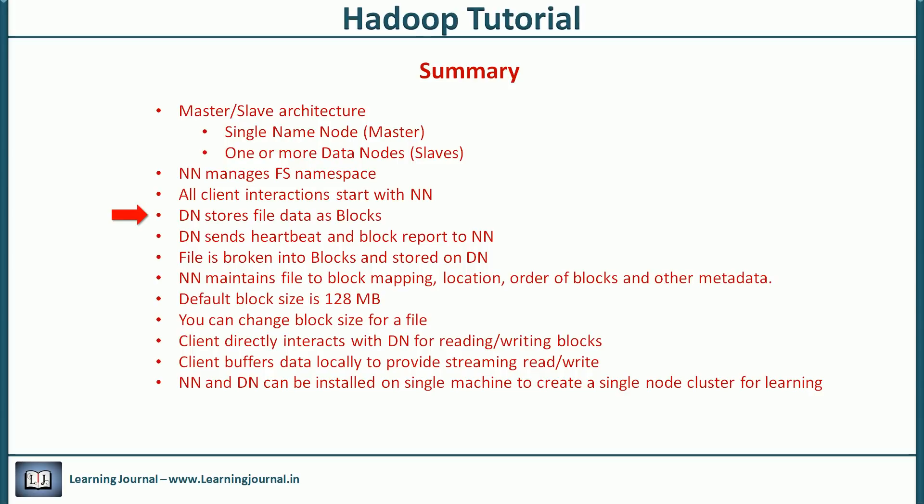The data node stores file data in form of blocks. Each data node periodically sends a heartbeat to name node to inform that it is alive. This heartbeat also includes resource capacity information that helps name node in various decisions. The data node also sends a block report to name node. The block report is a health information of all the blocks that are maintained by the data node. The HDFS will split the file into one or more blocks and store these blocks on different data nodes. The name node maintains the mapping of the blocks to the file, their order and all other metadata.